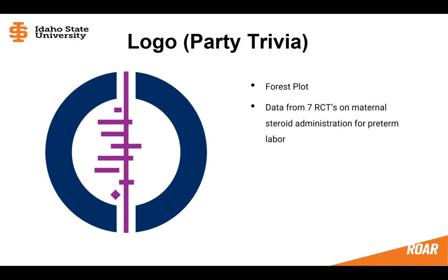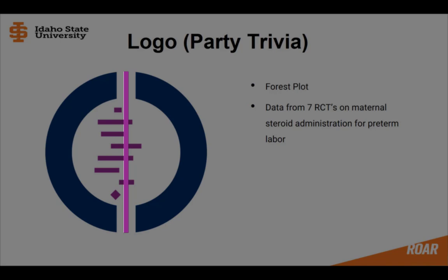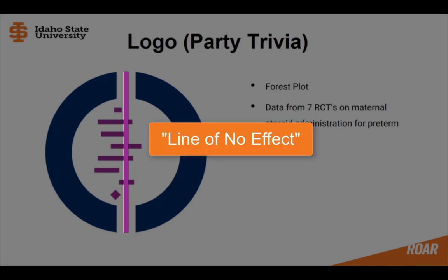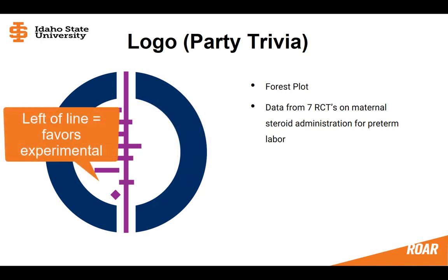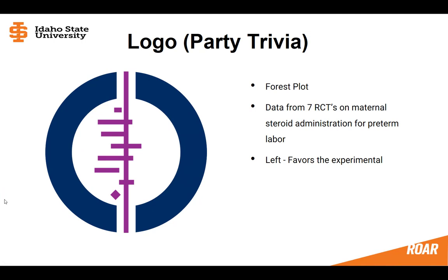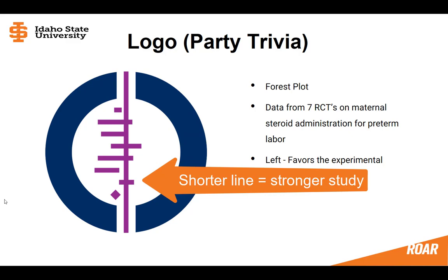This is a forest plot of seven randomized control trials, ranging from the early 70s to the 1980s, on administering corticosteroids to mothers about to have their babies before term. Each horizontal line in the plot represents a single study. The vertical line is called the line of no effect. Anything to the right of the line favors the control; anything to the left favors the experimental intervention. The horizontal lines represent the strength of the studies — the shorter the line, the stronger the study.